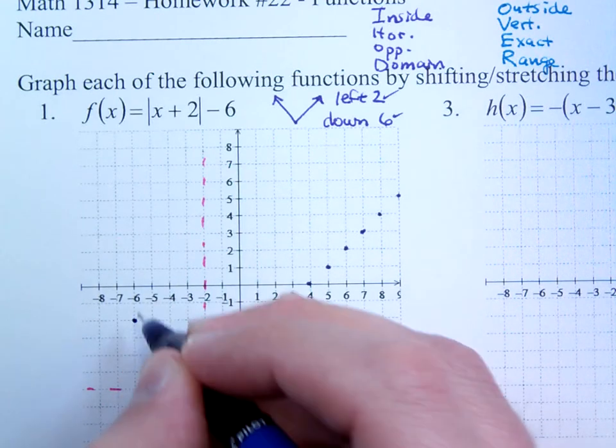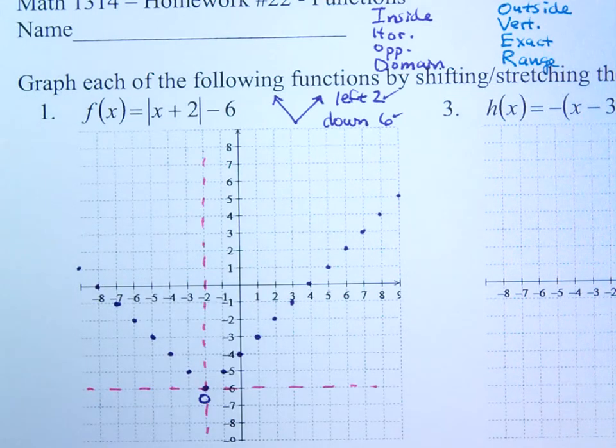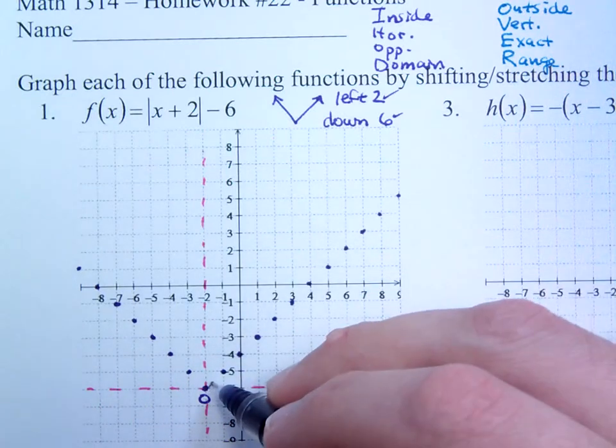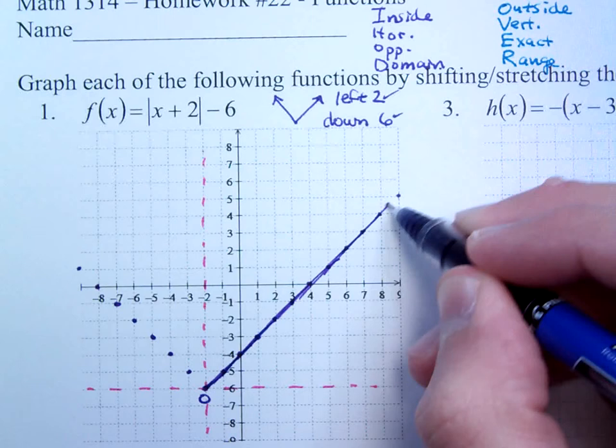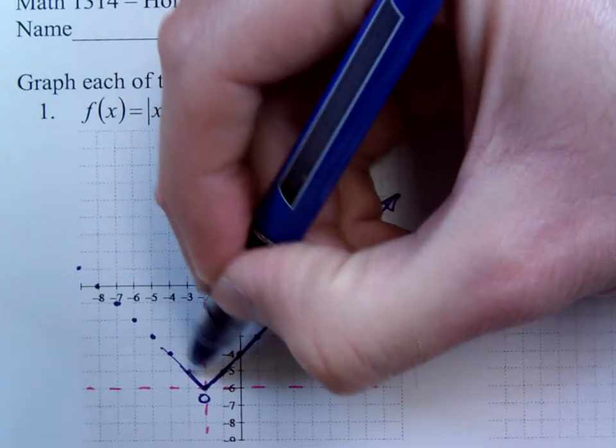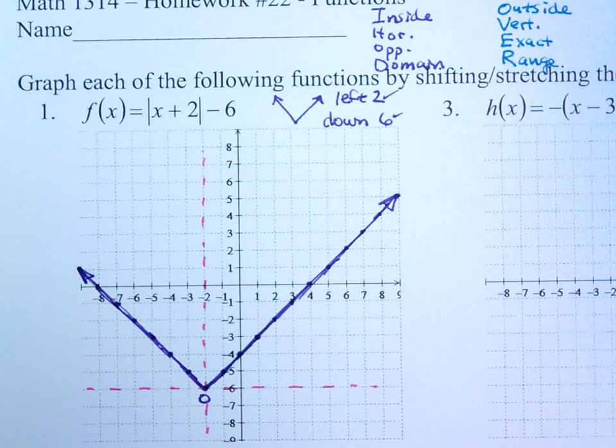Remember that there is a line of symmetry for absolute value functions, and that goes right through the vertex here. So here is your absolute value function. Make sure you put arrows at the ends because it does extend forever in both directions.